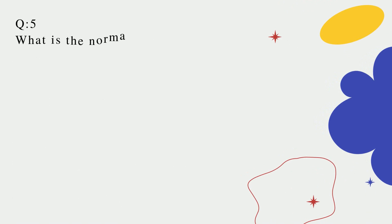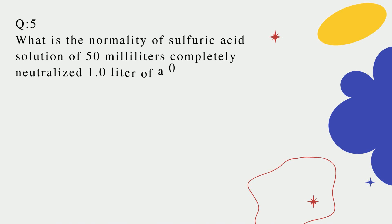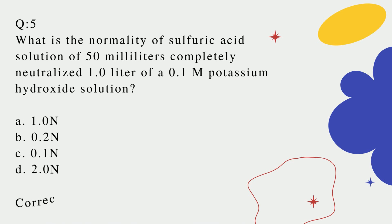Question number five: What is the normality of sulfuric acid solution of 50 milliliters, completely neutralized 1.0 liter of a 0.1 molar potassium hydroxide solution? A. 1.0? B. 0.2? C. 0.1? D. 2.0? Correct option is D.